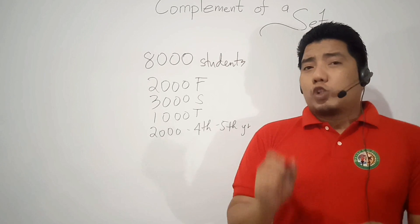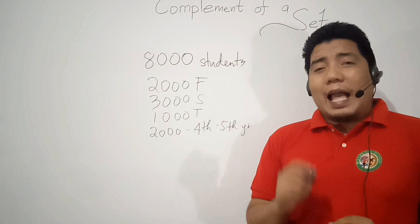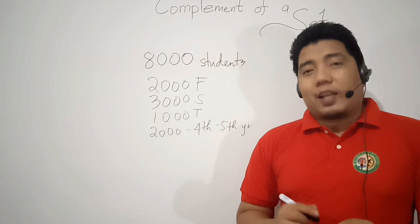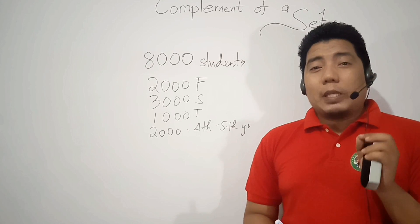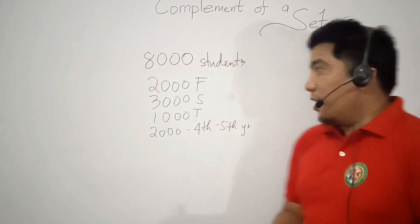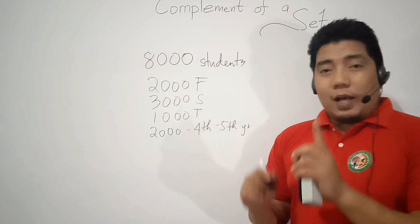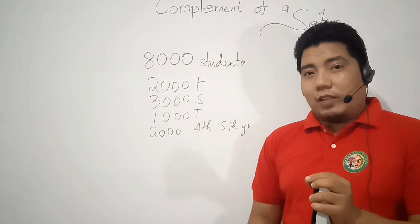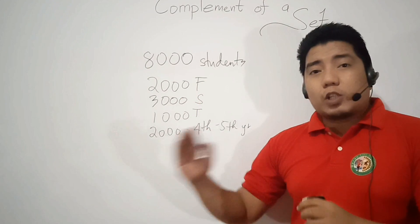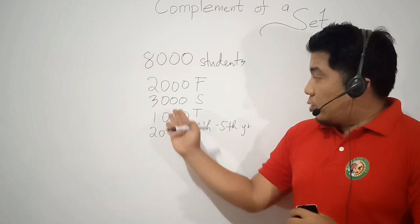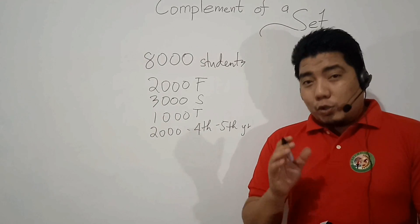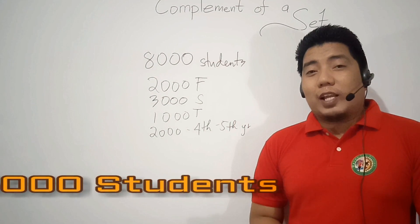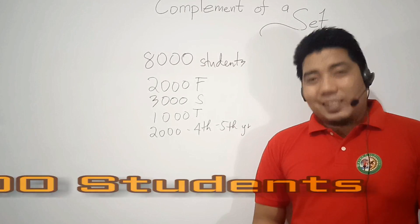This is the problem. Suppose you have to get one student out of the group, but this student must not be a 2nd year student. The question is, how many possible choices do you have? Since we are getting a student from the group of 8,000 but there is a restriction — the student is not a 2nd year student — we will exclude 3,000 students. So therefore, we will only have 5,000 students to select from.